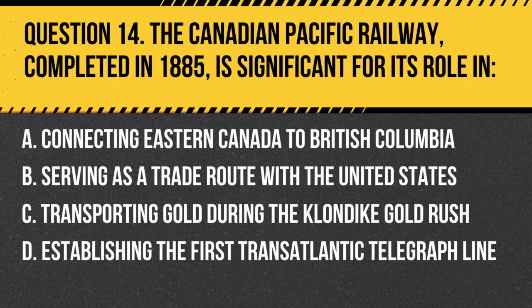Question 14. The Canadian Pacific Railway, completed in 1885, is significant for its role in: A. Connecting eastern Canada to British Columbia. B. Serving as a trade route with the United States. C. Transporting gold during the Klondike Gold Rush. D. Establishing the first transatlantic telegraph line.